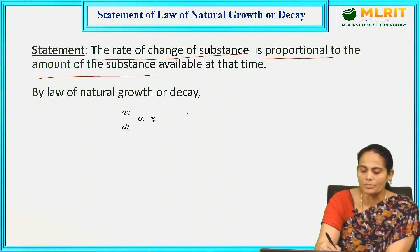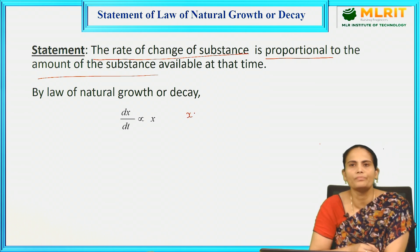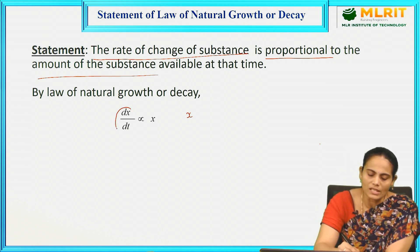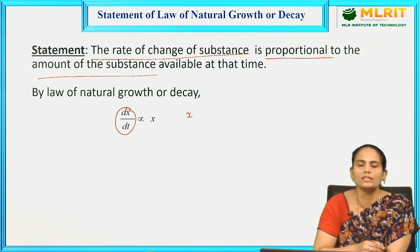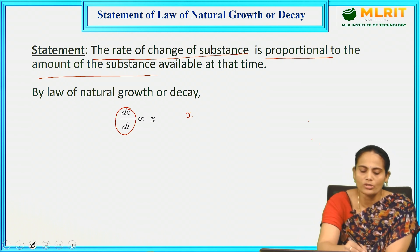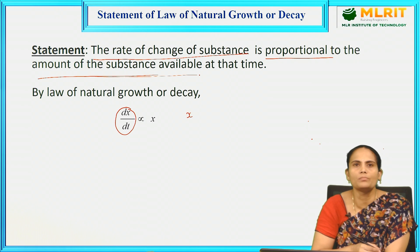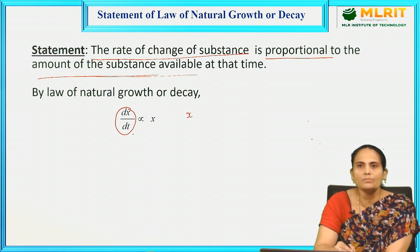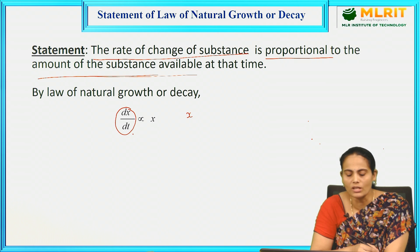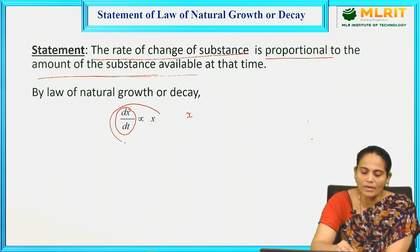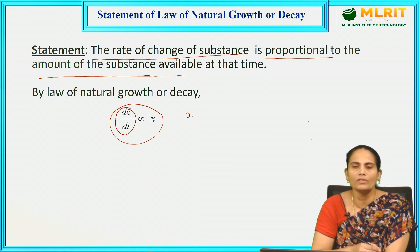We are taking the substance as x. The rate of change of substance is nothing but dx/dt, which is proportional to the amount of substance available at that time. That means dx/dt is proportional to x — this is the equation we get mathematically.